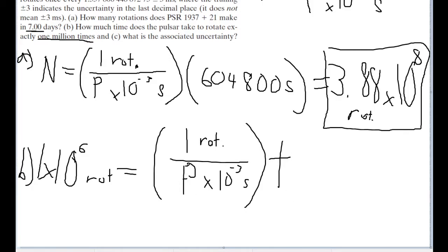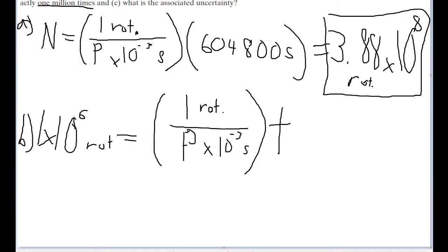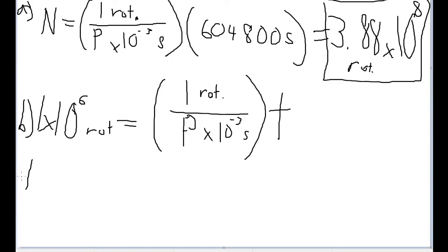Now, doing very simple algebra, just taking this whole thing and dividing by it, or because it's just 1 over, you could very simply just take P times 10 to the negative 3 and just multiply that by a million. And you'll get what T is equal to.